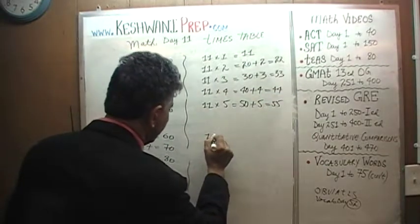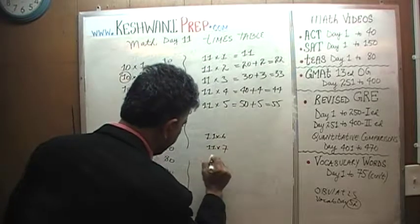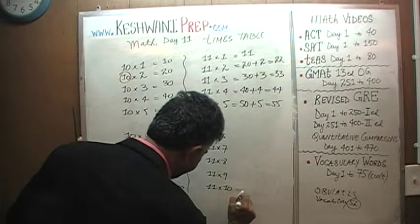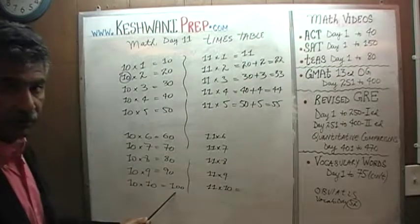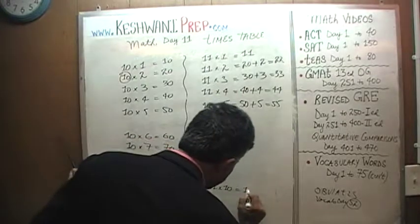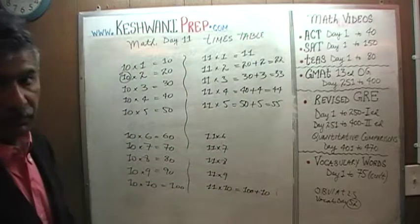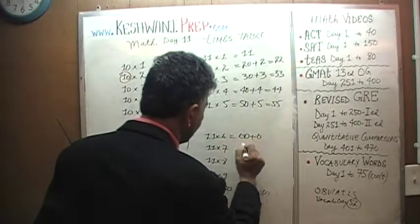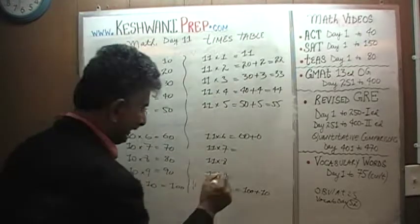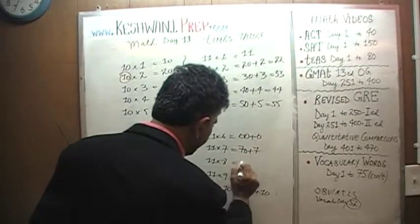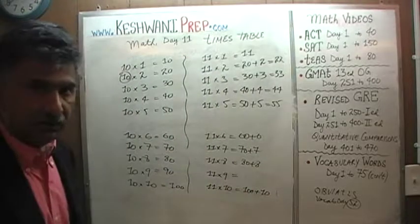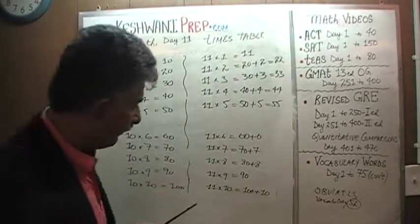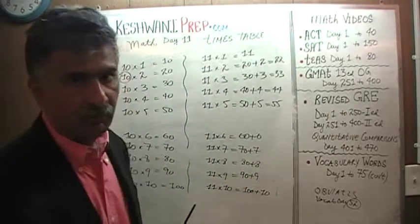Let's carry on: 11 sixes, 11 sevens, 11 eights, 11 nines, and finally 11 tens. 11 tens is going to be the same as 10 tens — which we know is 100 — plus 1 more ten, giving us 110. 11 sixes are 10 sixes plus 1 more six: 60 plus 6. 11 sevens are 10 sevens which is 70 plus 1 more seven. 80 plus 1 more eight. 11 nines are 10 nines which is 90, and you add one more nine. So the answers are 66, 77, 88, 99, and 110.